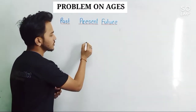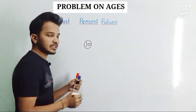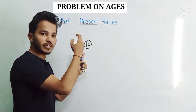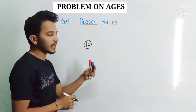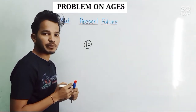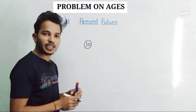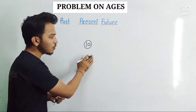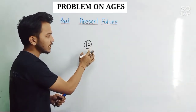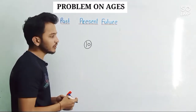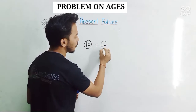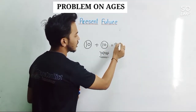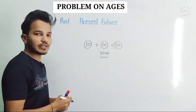Let me take an example: the present age of a person is 10 years. What will be the age of the person after 10 years? Here present age is given as 10 years and we need to calculate the age 10 years after. Generally, we add the number of years mentioned — so 10 years after, the age will be 20 years. We add those years normally. So future age = 20 years.